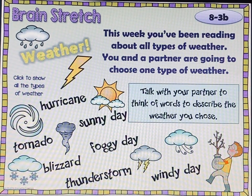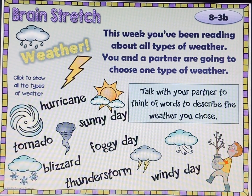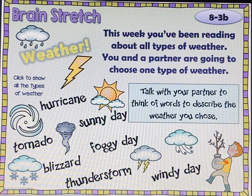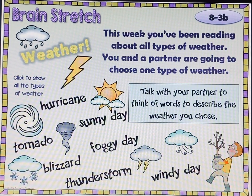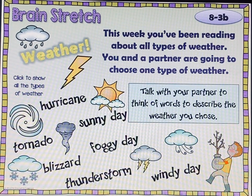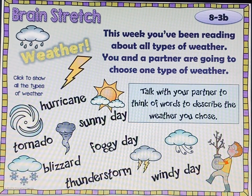Some of the words you might have chosen: if you picked hurricane, you might have picked 'the eye' from the eye of the storm, or 'deadly.' For sunny day, you might have put 'clear' or 'bright.' For tornado, you might have put 'dangerous,' 'spinning,' 'windy.' For blizzard, you might have put 'cold' or 'freezing.' For foggy day, you might have said something like 'blurry' or 'can't see,' something like that where you can't see through the fog.